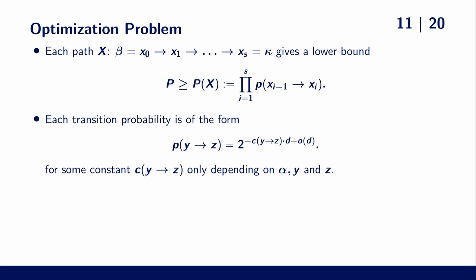Because we take the product of these transition probabilities, the asymptotic success probability of the path is fully determined by the sum of these constants. So to find the asymptotic optimal path, we only need to find the path that minimizes the sum of these constants, hence turning this into an optimization problem.